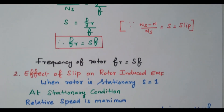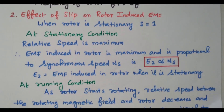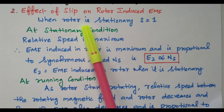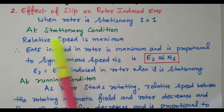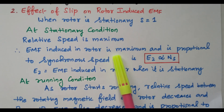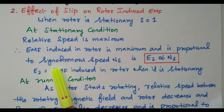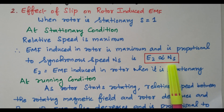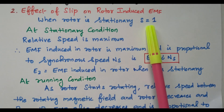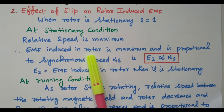Effect of slip on rotor induced EMF. When the rotor is stationary, s = 1, relative speed is maximum, and induced EMF is maximum — E2 is directly proportional to Ns. E2 is the EMF induced in the rotor at stationary condition. During stationary condition s = 1, speed is maximum, and induced EMF is maximum, depending upon synchronous speed.